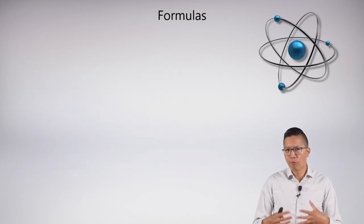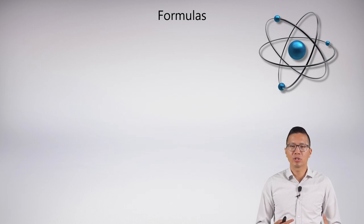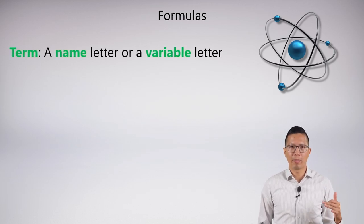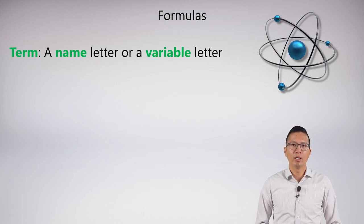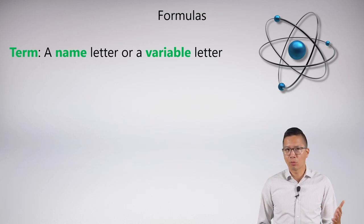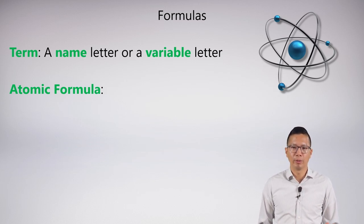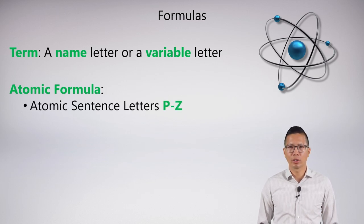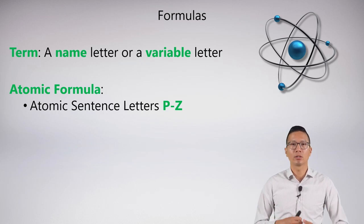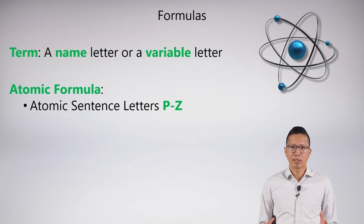Our goal is to understand the new formulas we'll be able to symbolize in predicate logic. We start at the very basic building block, which we call a term. A term is just a name letter or a variable letter — A through H or I through Z. An atomic formula is the smallest building block. Everything from sentential logic still applies, so the atomic sentence letters P through Z, which are statements that can be true or false, are still atomic formulas.